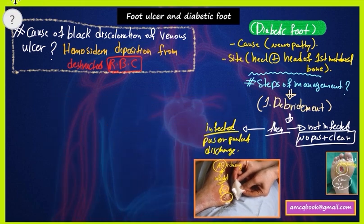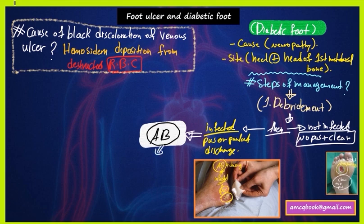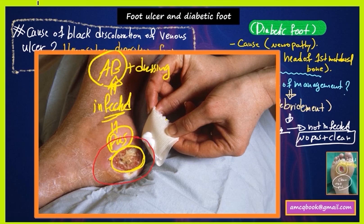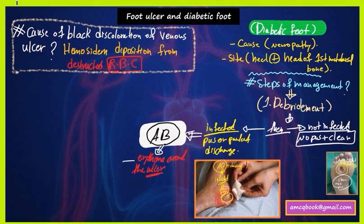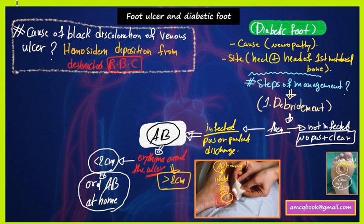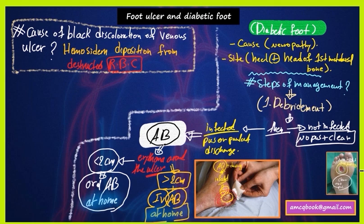An important question: how do you give the antibiotic — oral or IV, at home or in hospital? For the AMC exam, it depends on the erythema around the ulcer. If the erythema is less than 2 cm, the treatment is oral antibiotic at home. If the erythema is more than 2 cm, then IV antibiotic, also at home — there is no hospital admission in the AMC exam.